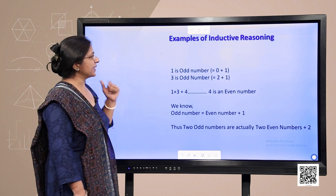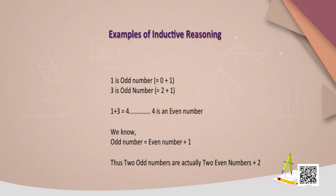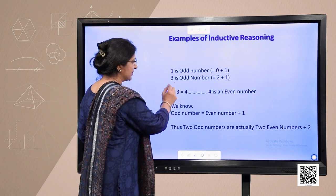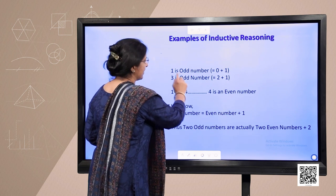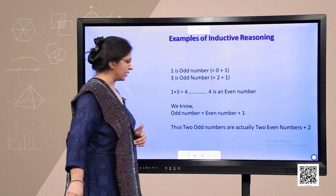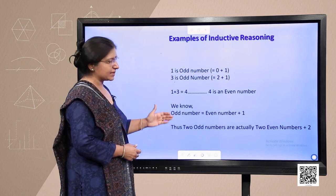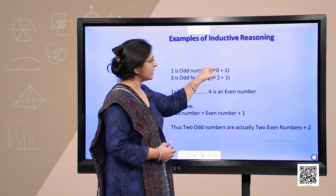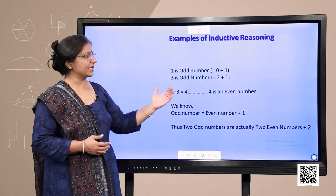With a mathematical example: 1 is an odd number representable as 0+1, and 3 is an odd number representable as 2+1, where 0 and 2 are even numbers. Now 1+3=4, which is an even number. We can write each odd number as an even number plus 1. From these statements we can generalize that the sum of two odd numbers equals two even numbers plus 2. This is the mathematical inductive reasoning example.